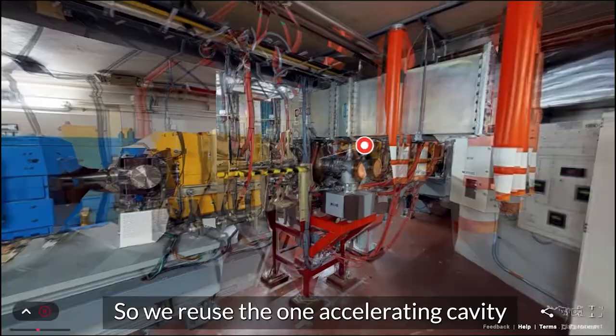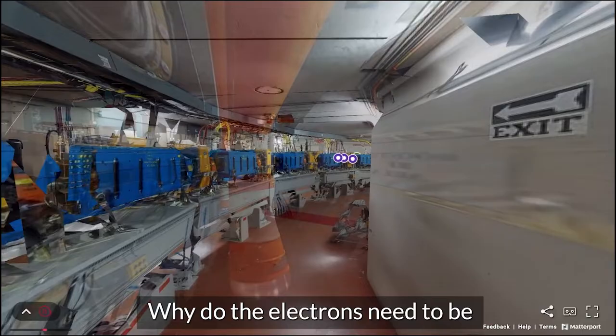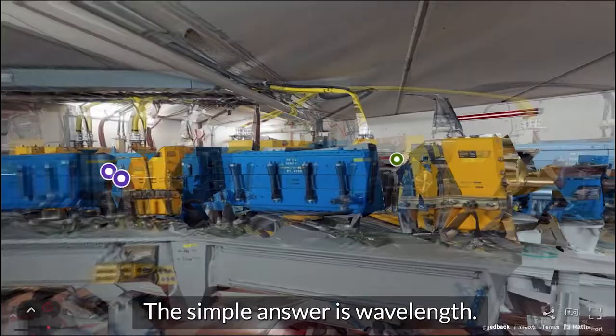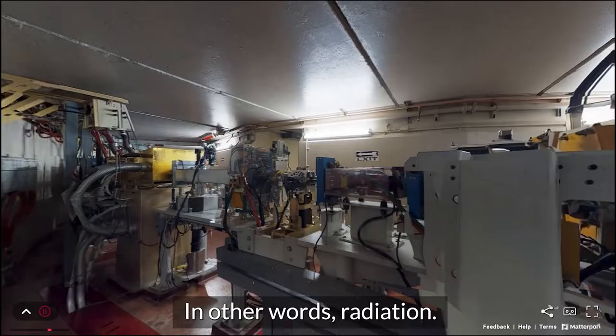But why do this anyway? Why do the electrons need to be sped up so fast? The simple answer is wavelength. When electrons move, they give off light, in other words, radiation, which as we all know, has a wavelength.